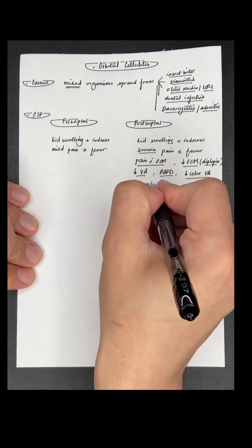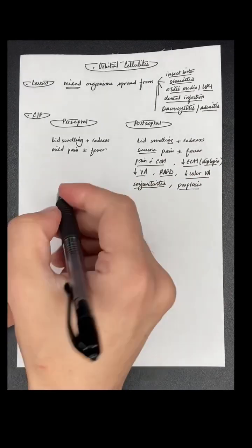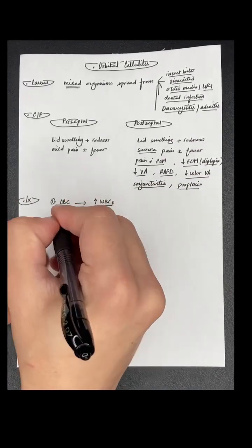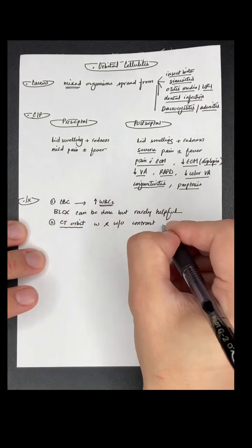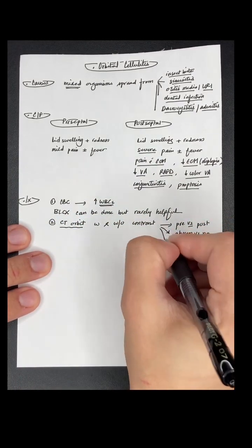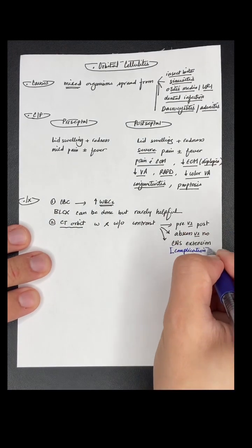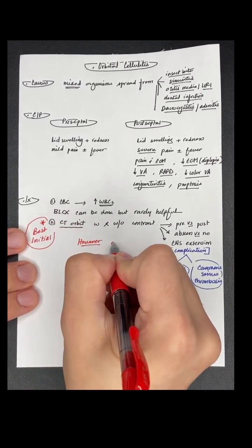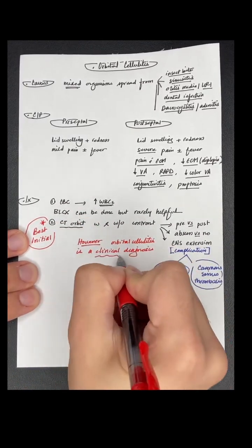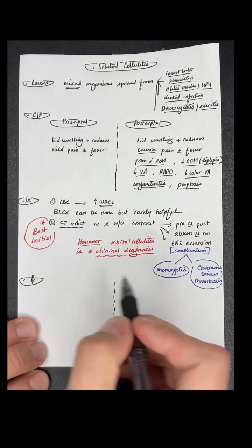Postseptal causes severe pain on extraocular muscle movements, decreased vision, color perception issues, relative afferent pupillary defect, or conjunctivitis. CT orbit is the best initial investigation to check for CNS extension like meningitis or cavernous sinus thrombosis, but it's mainly a clinical diagnosis.